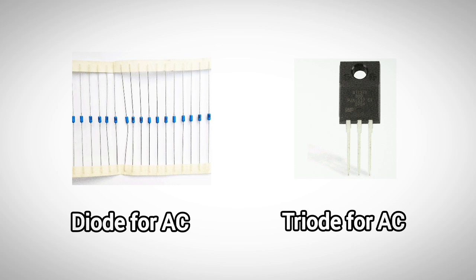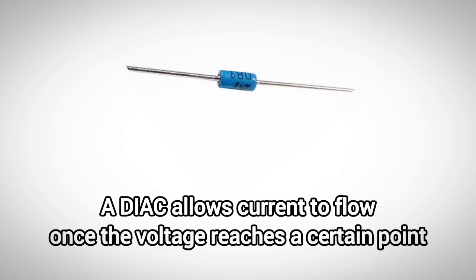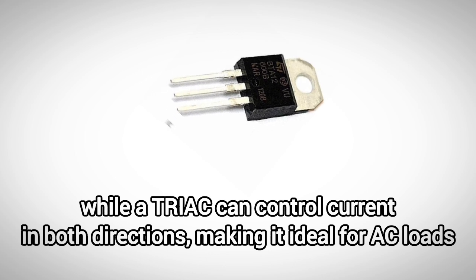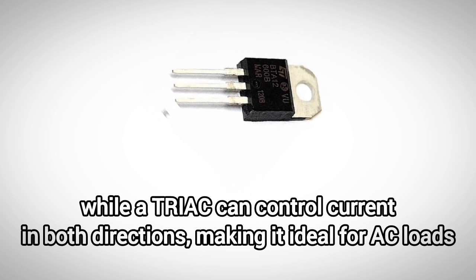Closely related to the Thyristor are DIAC, which stands for diode for alternating current, and TRIAC, which stands for triode for alternating current. These are used mainly for AC current control. A DIAC allows current to flow once the voltage reaches a certain point, while a TRIAC can control current in both directions, making it ideal for AC loads.